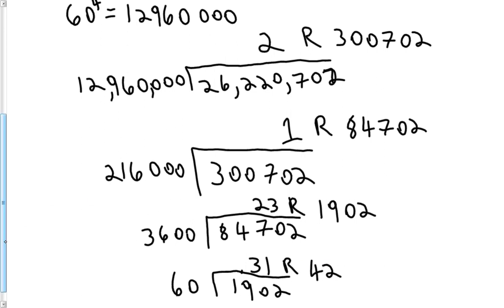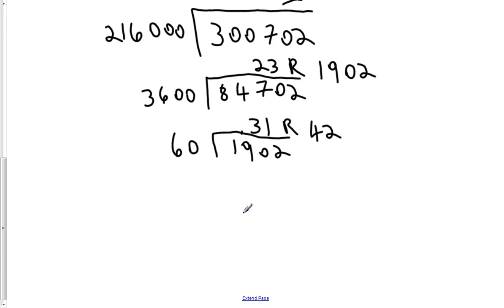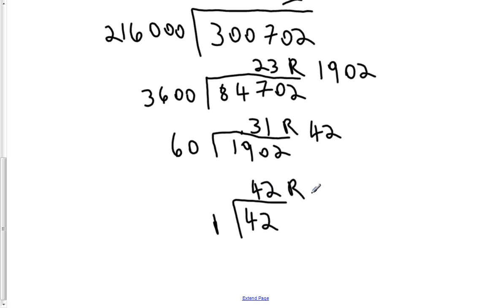The last place value is the ones place. We don't really need to do this, but to be consistent, we want to see how many times 1 goes into 42, which is obviously 42 times. You don't stop here until you get a remainder of zero, and anytime you get down to the ones place, you will have a remainder of zero. So now I know what numerals I need to put in each of these place values.